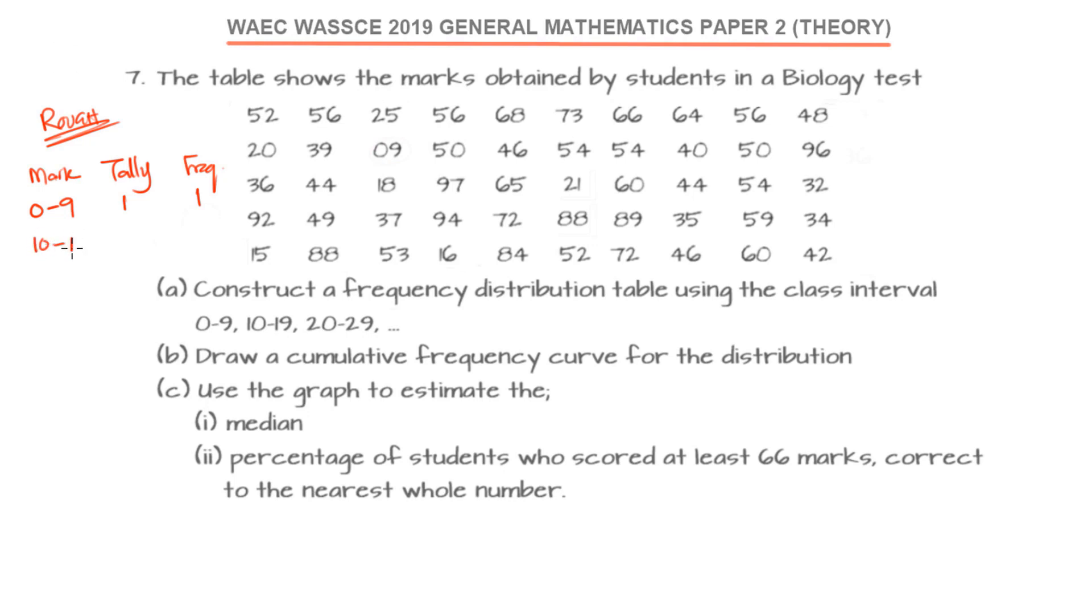Then we have 10 to 19. We are going to be looking for all the places that we have numbers from 10 to 19. Second row, none. Third row, we have 18. The fifth row, we have 15, that's two tallies. We have 16, that's another tally. Don't forget to tally your data. It will help you to actually map out what you need to get and not make mistakes. You need to be very careful.